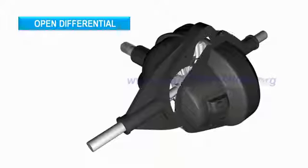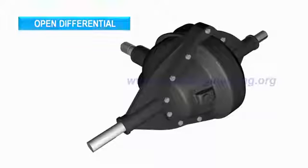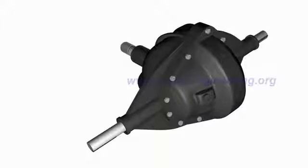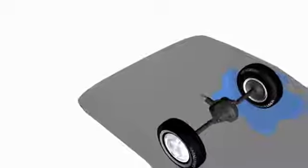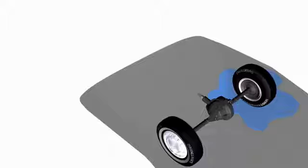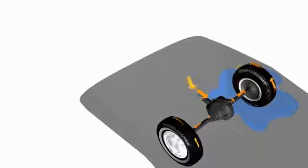The differential we have gone through so far is known as open or standard differential. It is capable of turning wheels at different RPM, but it has got one major drawback. Consider a situation where one wheel of the vehicle is in a surface with good traction and other wheel on a slippery track. In this case, a standard differential will send the majority of the power to the slippery wheel, so the vehicle won't be able to move.